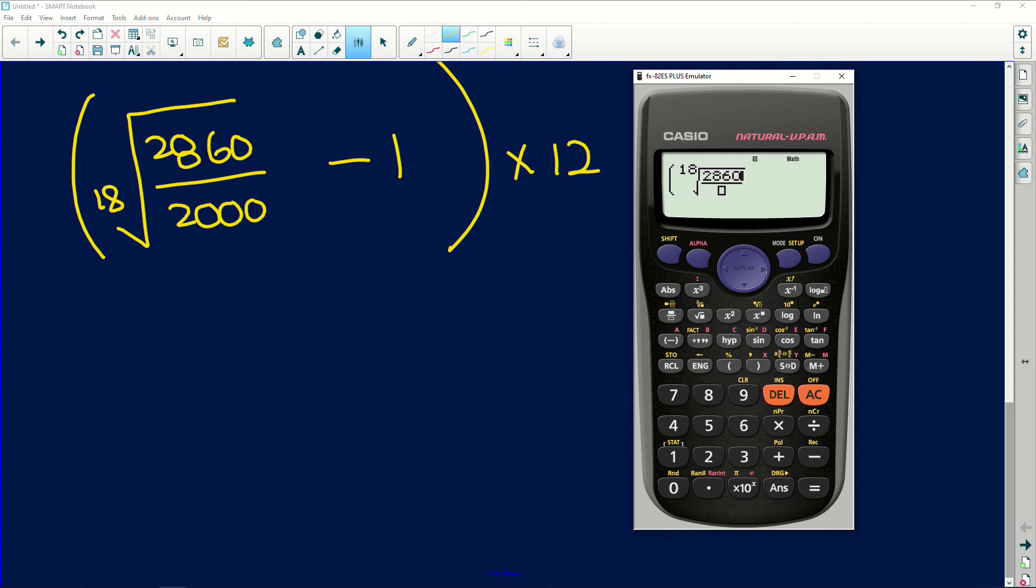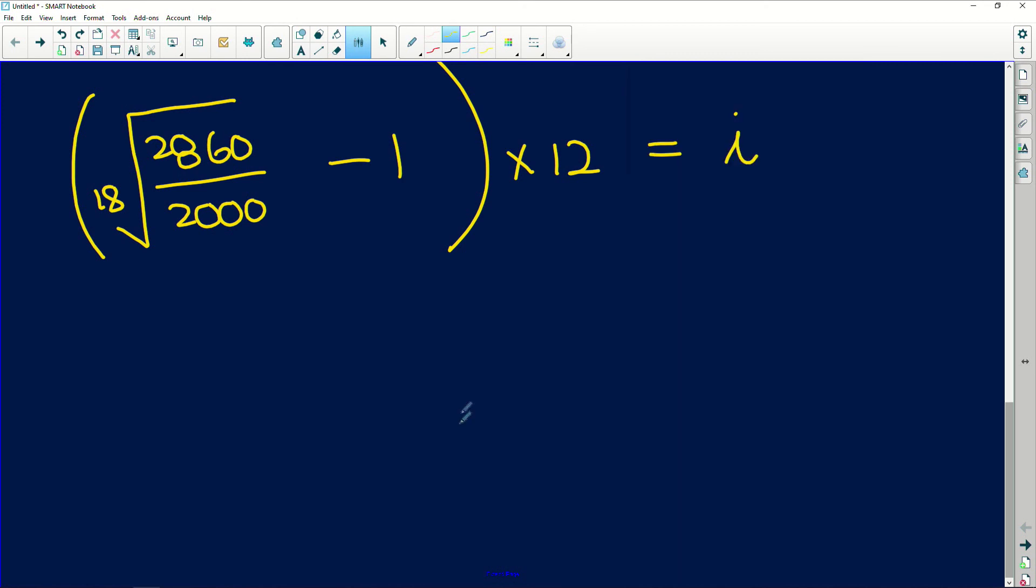Now we have a fraction, so 2860 divided by 2000. Remember to get out from under the square root, press Y twice and then minus 1. All closed brackets and then we multiply that by 12. And we get 0.2408.